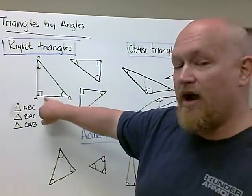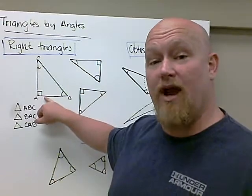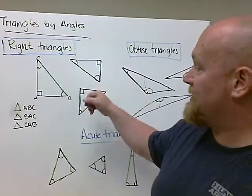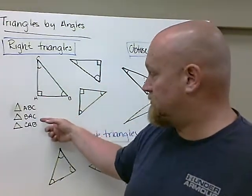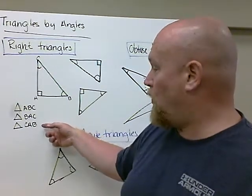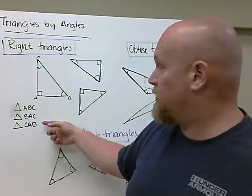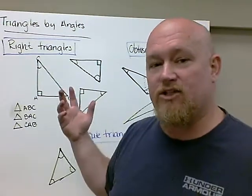As soon as you see that square, you know that it's going to be a right triangle. The triangle can be read as triangle ABC, triangle BAC, or triangle CAB. And you can start at any vertex you want with a triangle.